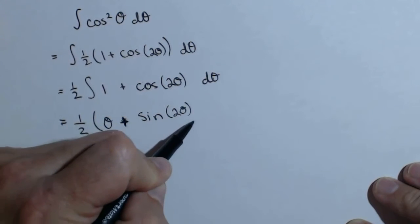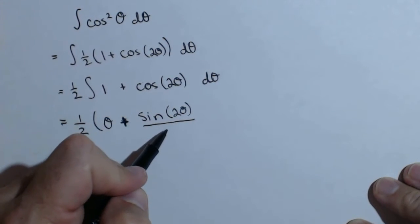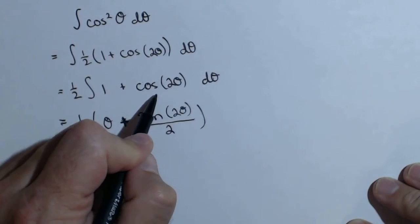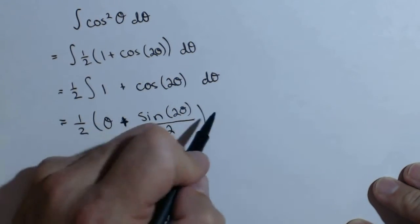But because it's two theta, the chain rule says we would multiply by two, so reversing the chain rule means we divide by two. The other way you can do that piece is with a u-substitution to see where this two comes from.